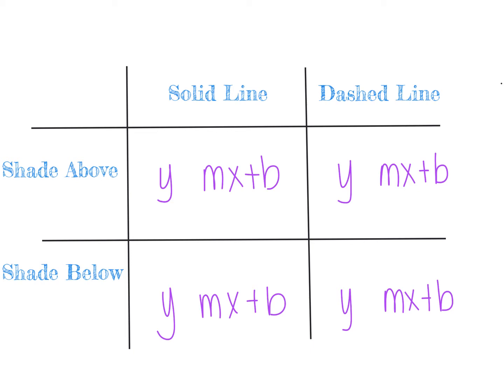A quick review of linear inequalities. Since they're linear, they're all going to be in the y = mx + b form. The direction and type of inequality symbol determines what the graph looks like specifically.